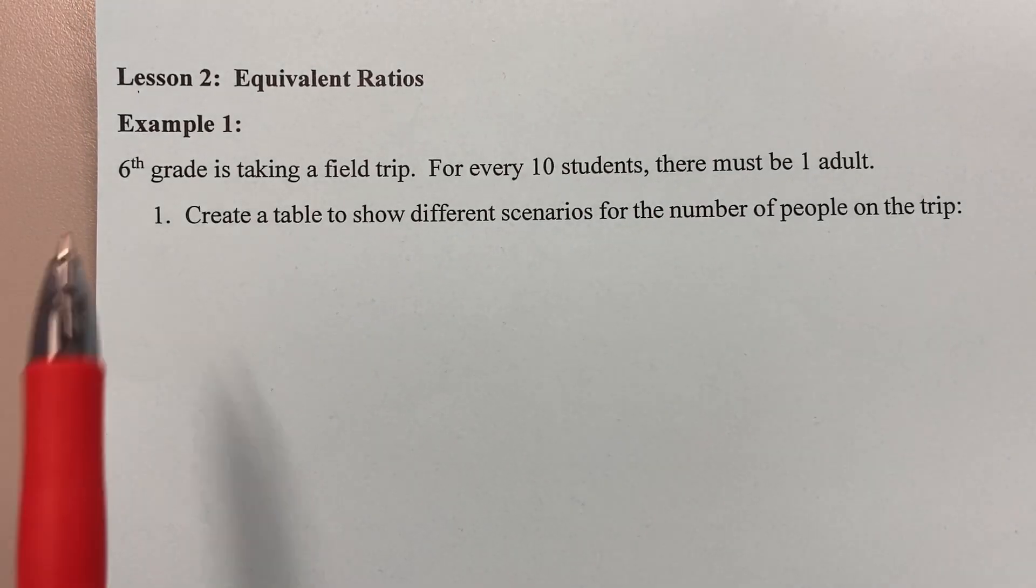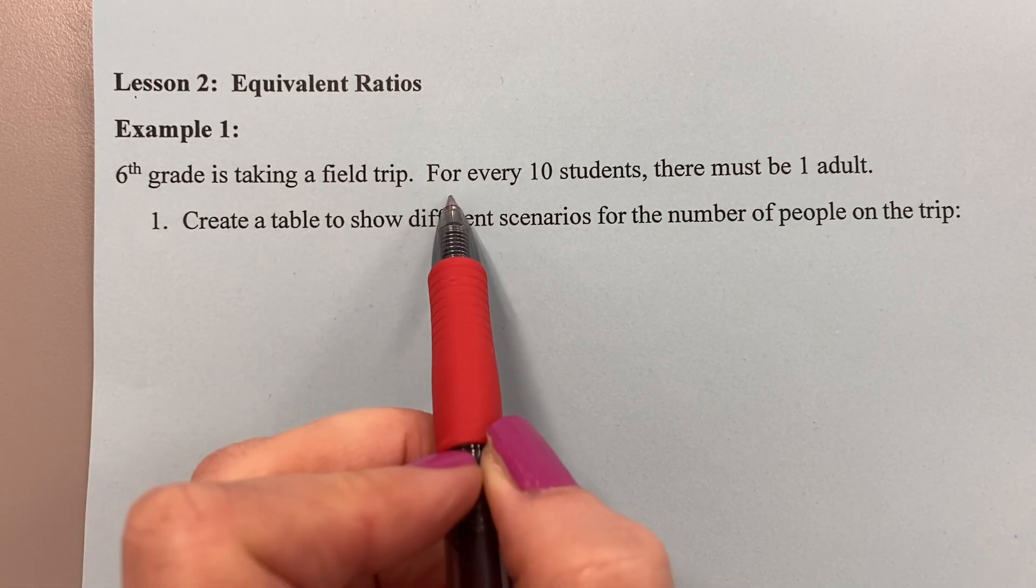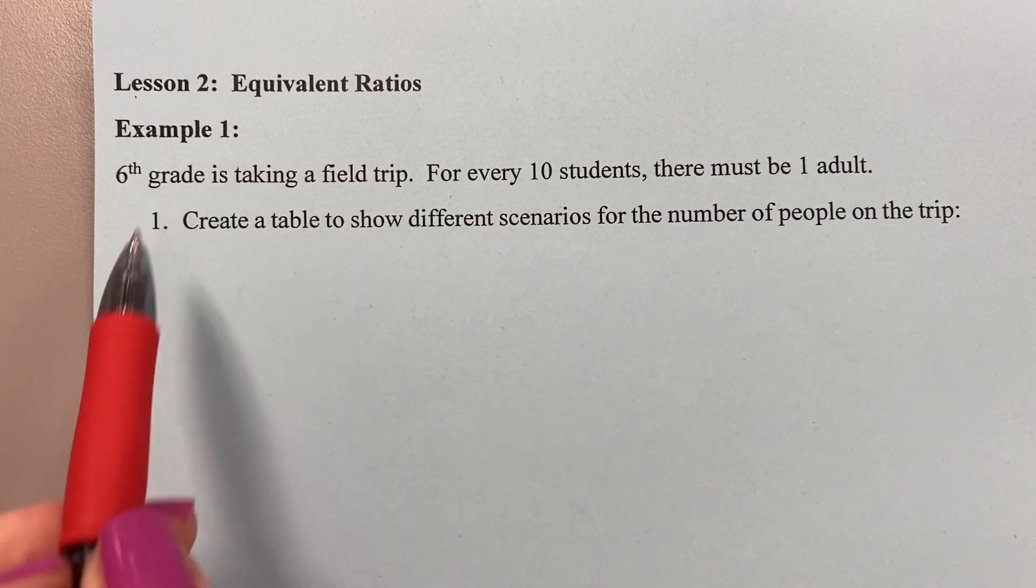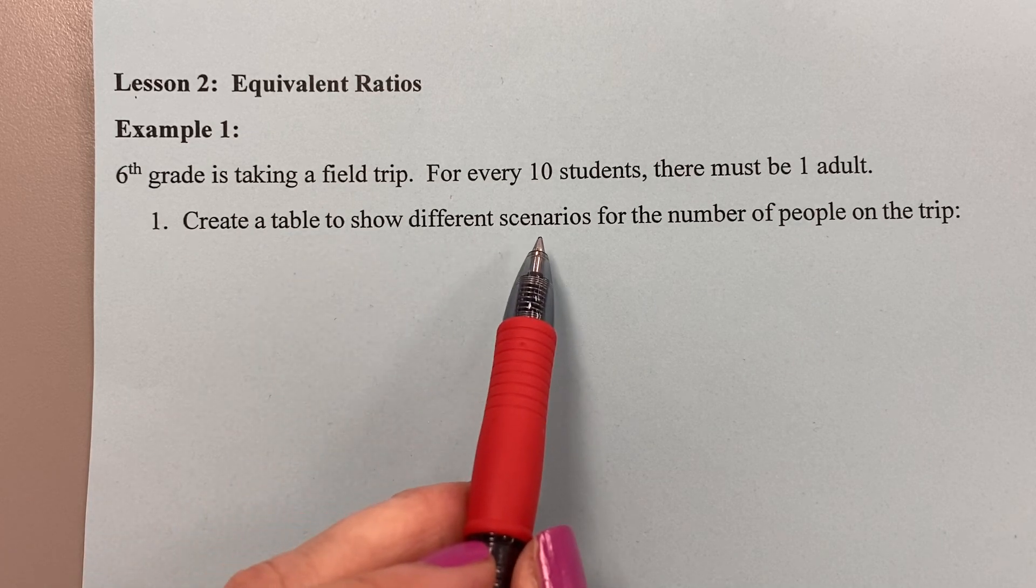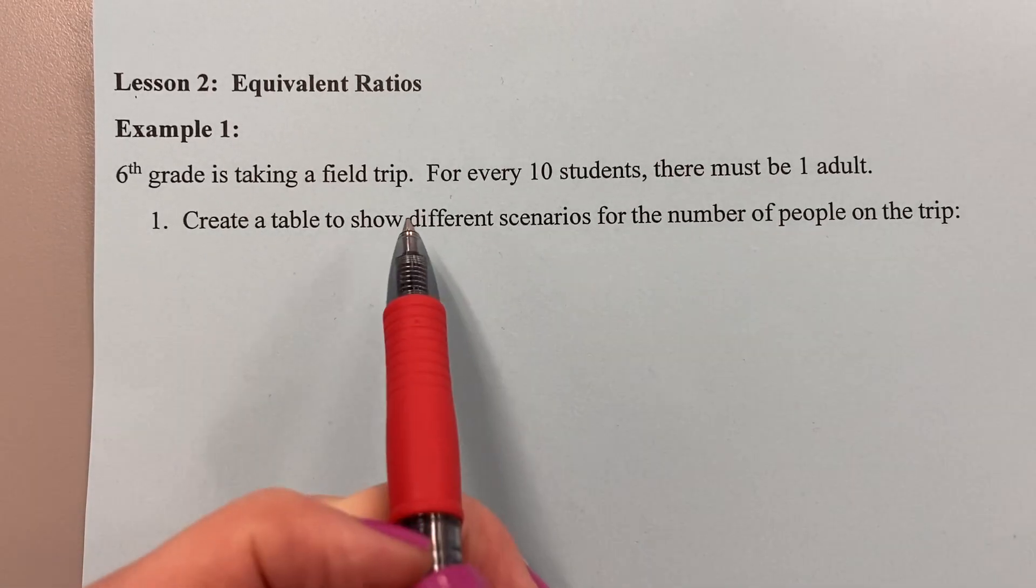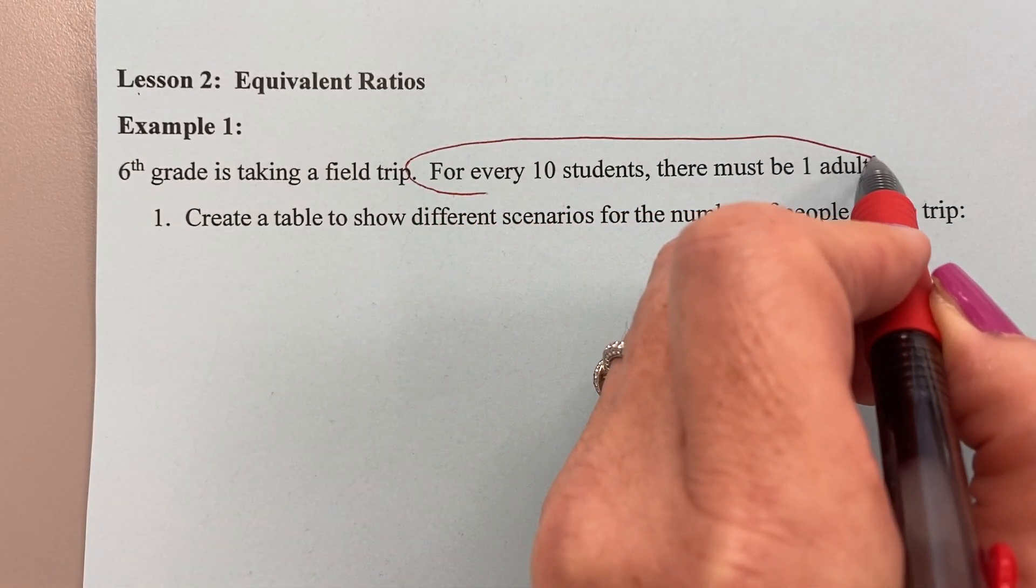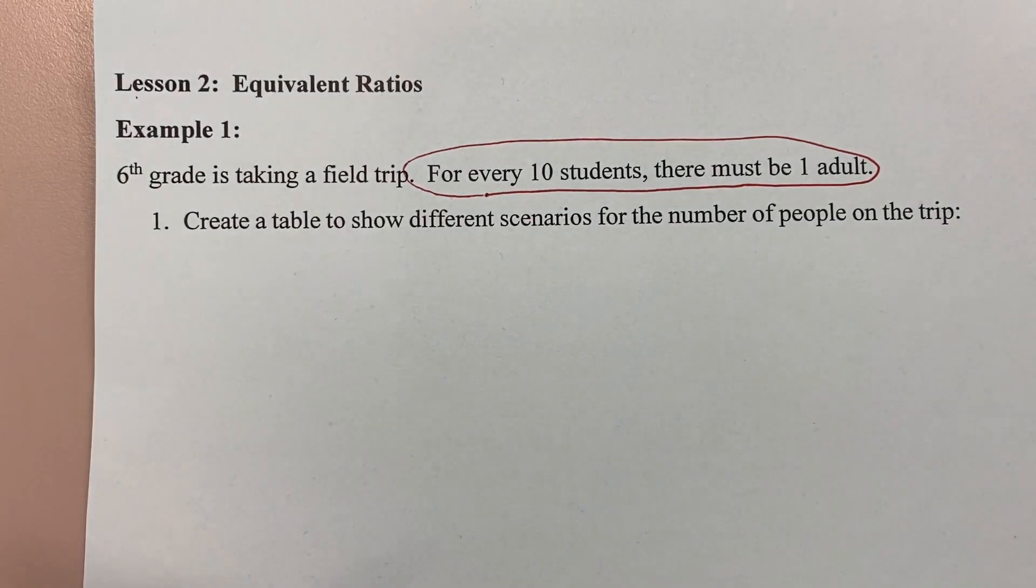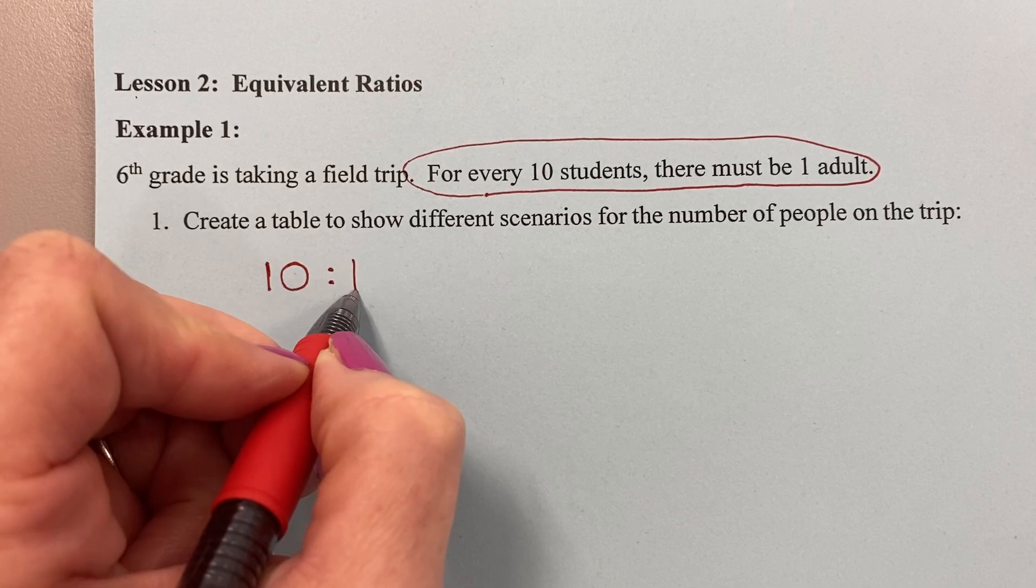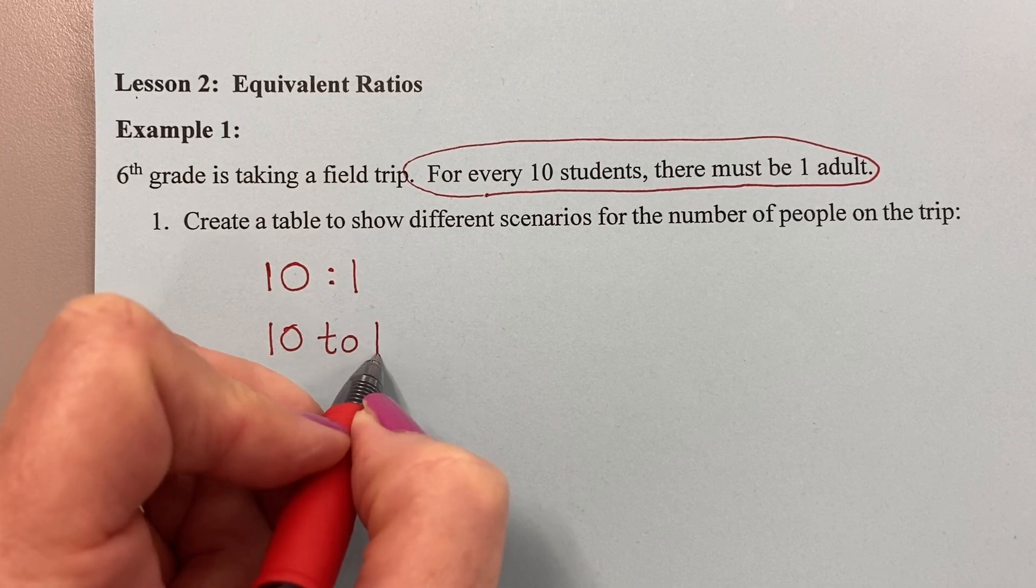It says sixth grade is taking a field trip. For every 10 students, there must be one adult. Create a table to show different scenarios for the number of people on the trip. So yesterday we studied ratios. If I was writing a ratio for this sentence, for every 10 students there must be one adult, that ratio would look like this: 10 colon 1, or 10 to 1. That's what we learned yesterday.